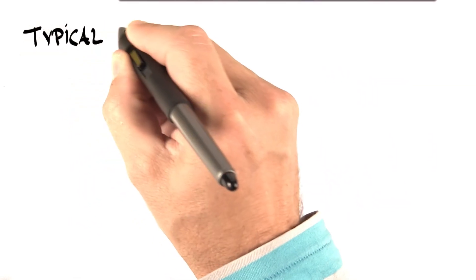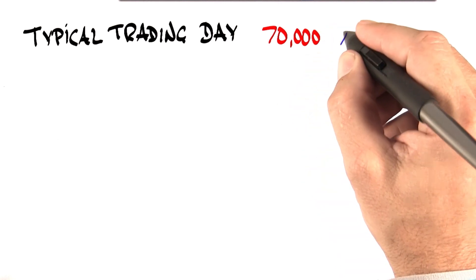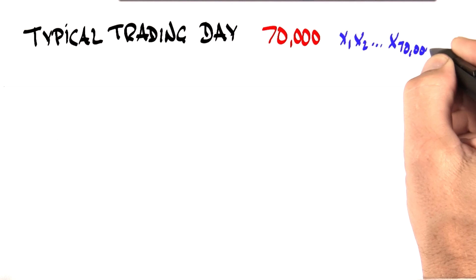So in a typical trading day, Apple stock traded about 70,000 times, giving us 70,000 data points of prices during the day.